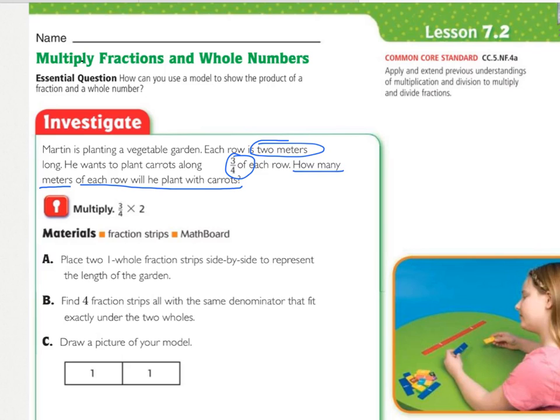You should have underlined how many meters of each row will he plant with carrots, because that's what you're being told to find, and then circled 3 fourths of each row, and then circled 2 meters, because that's how long each row is. Now, it does tell us to use fraction strips, but we are not going to. We are going to go straight to the picture.